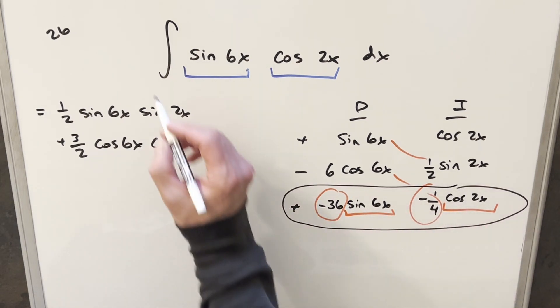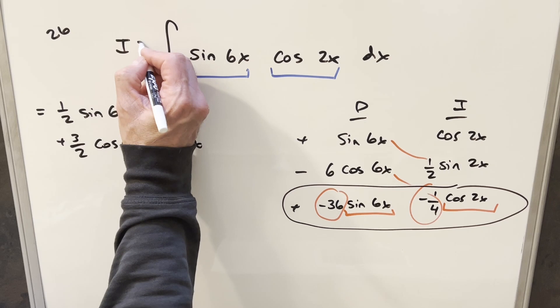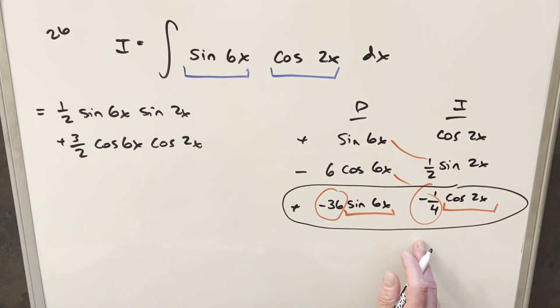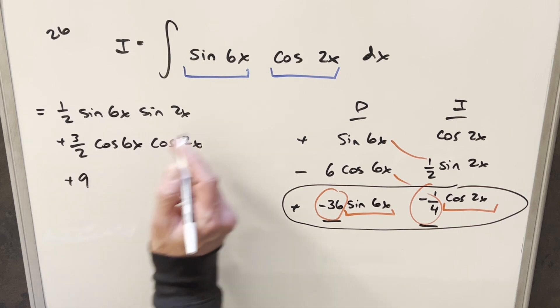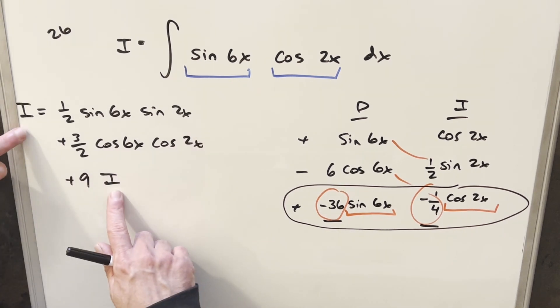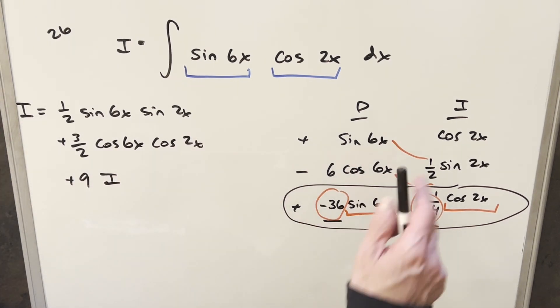I'll just kind of create a label on our original problem. We'll call this I because we're going to get an I here. Now for the constant, minus 36 times minus 1 fourth. Out front, that's going to give me plus 9. So we're going to have plus 9 times this thing, I. And this whole thing is going to be I, but let me just rewrite it to get a little bit more space on the board.